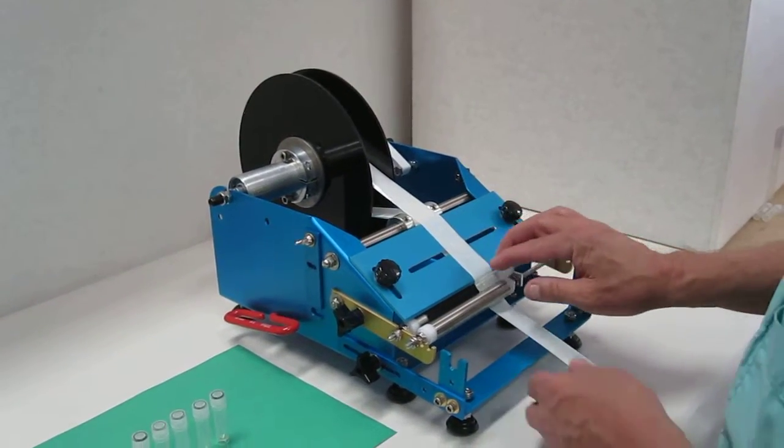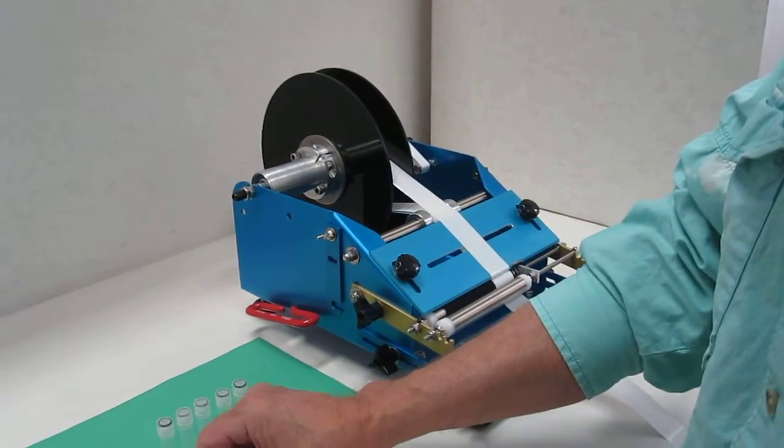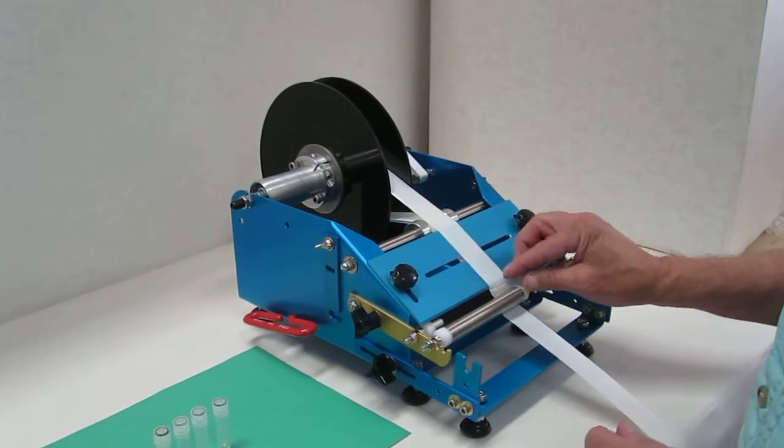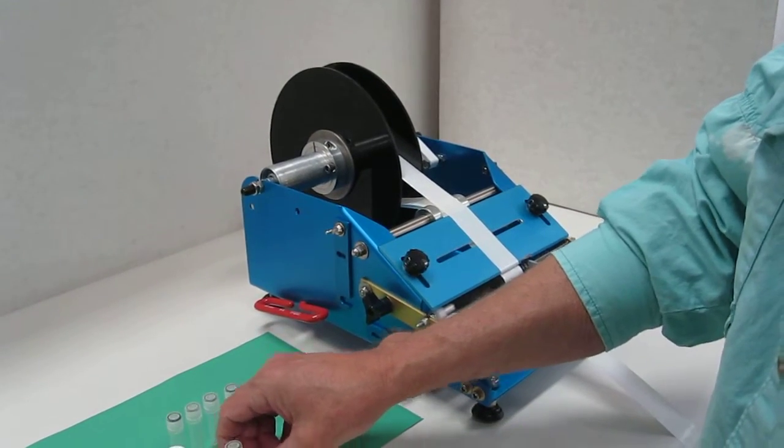This is the Race Junior machine, customized to apply labels to these very small biomedic vials. These vials are only 3-eighths of an inch in diameter, compared to 5-eighths of an inch for a lip balm.